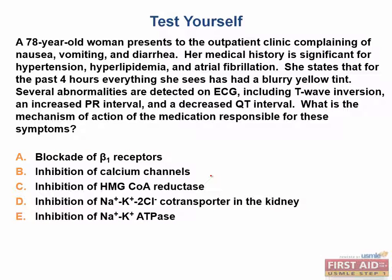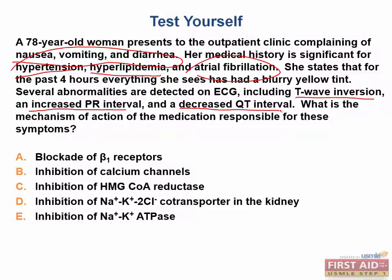Final test question: A 78-year-old woman presents to the outpatient clinic complaining of nausea, vomiting, and diarrhea. Her medical history is significant for hypertension, hyperlipidemia, and AFib. She states that for the past four hours, everything she has seen has had a blurry yellow tint. Several abnormalities are detected on ECG including T wave inversion, an increased PR interval, and a decreased QT interval. What is the mechanism of action of the medication responsible for these symptoms?